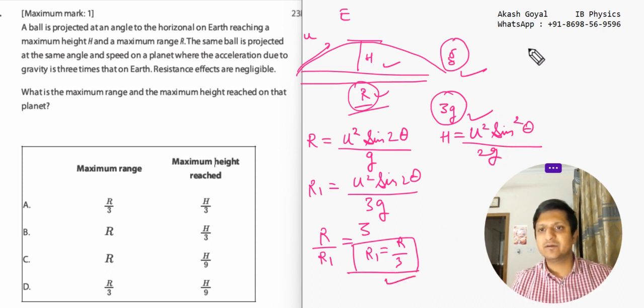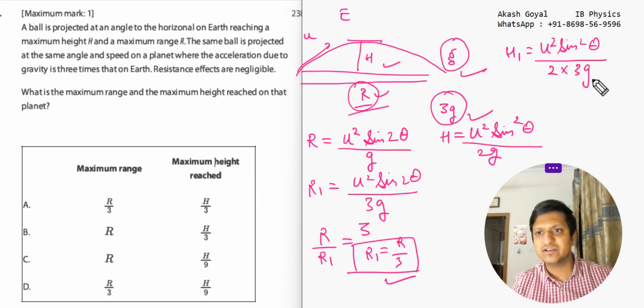And in a similar way, h1 will be u square sine square theta over 2 into 3g. And when we divide h1 by h, it would be 1 by 3. So h1 equals h by 3.